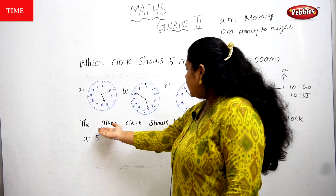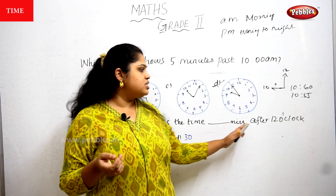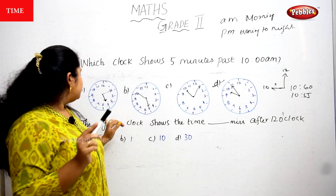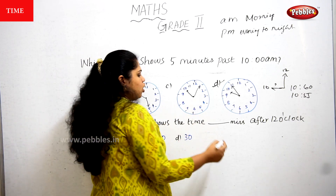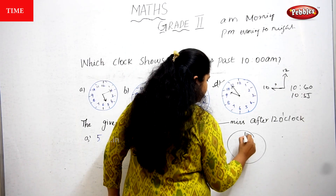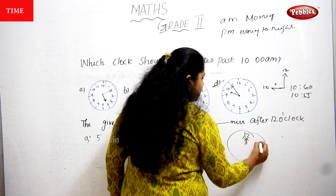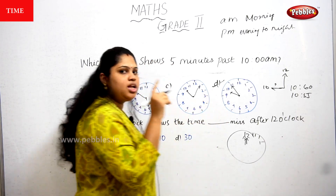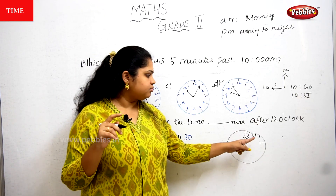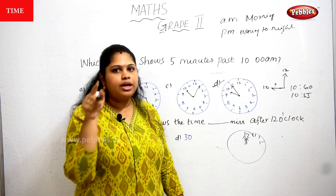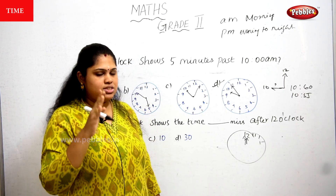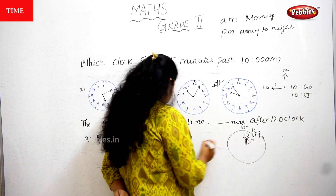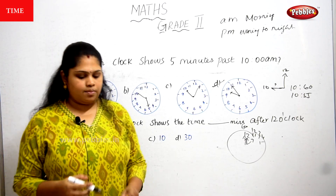Moving to the second question: the given clock shows the time — blank minutes after 12 o'clock. After 12 o'clock, both needles are at the same position. Then the big needle moves toward 1, crossing 5 counts. So after 12 o'clock, the answer is 1 minute. Option B is the right answer.